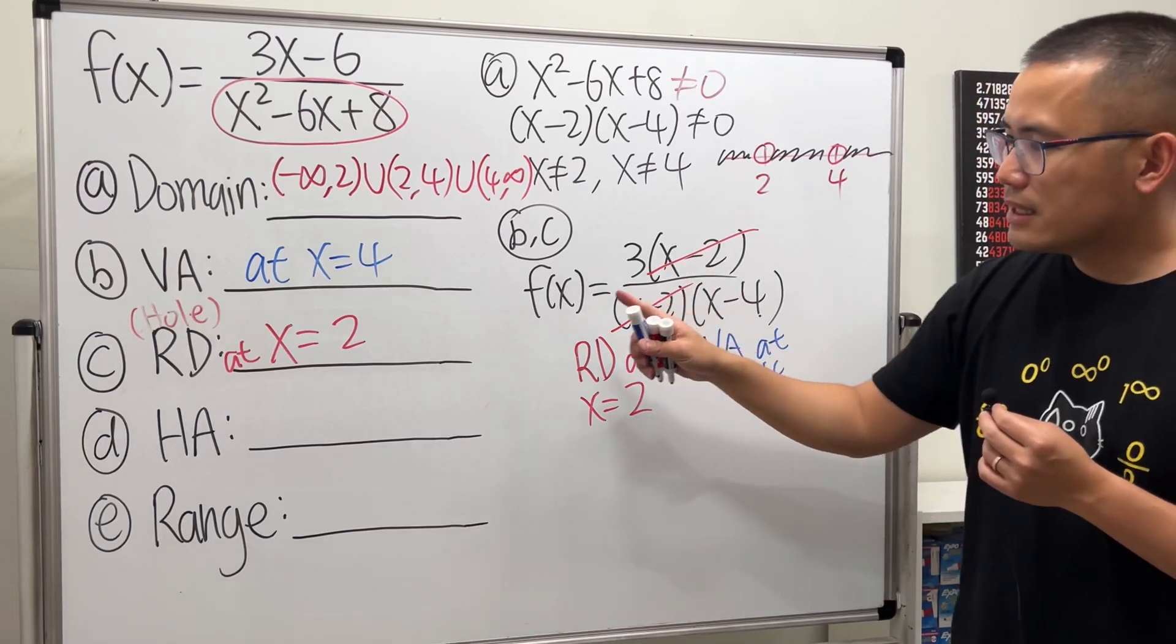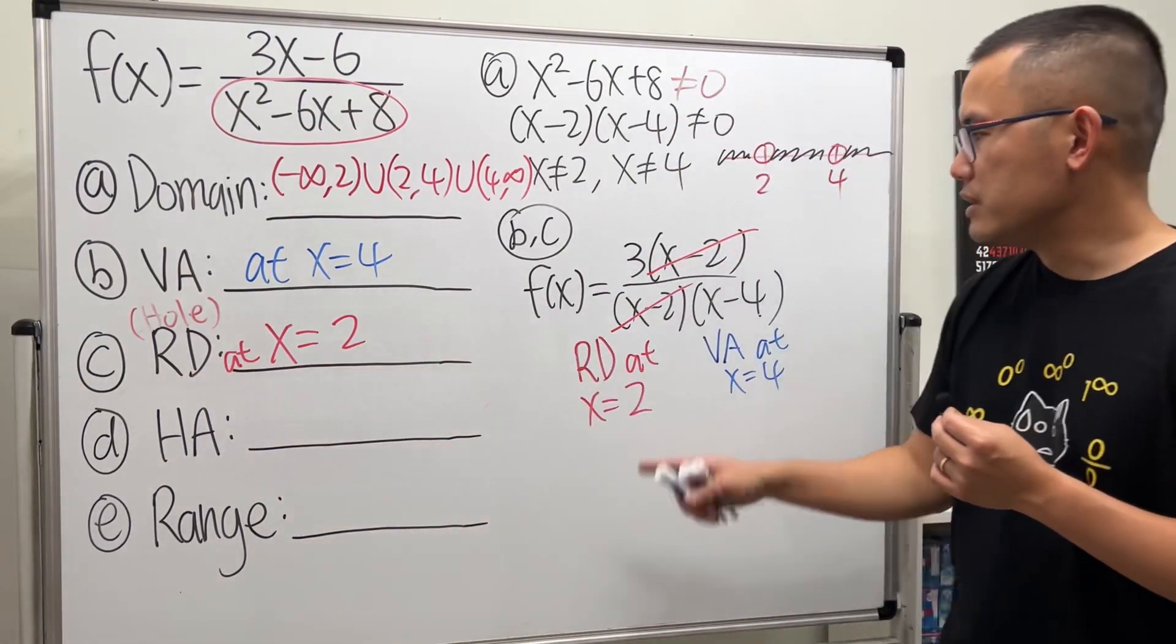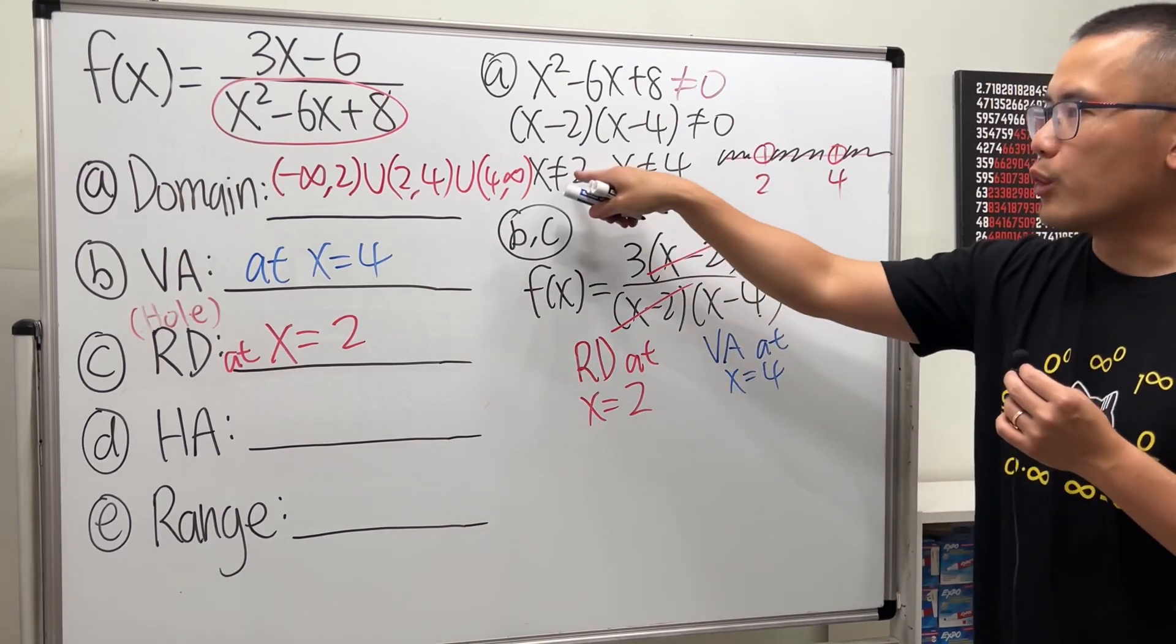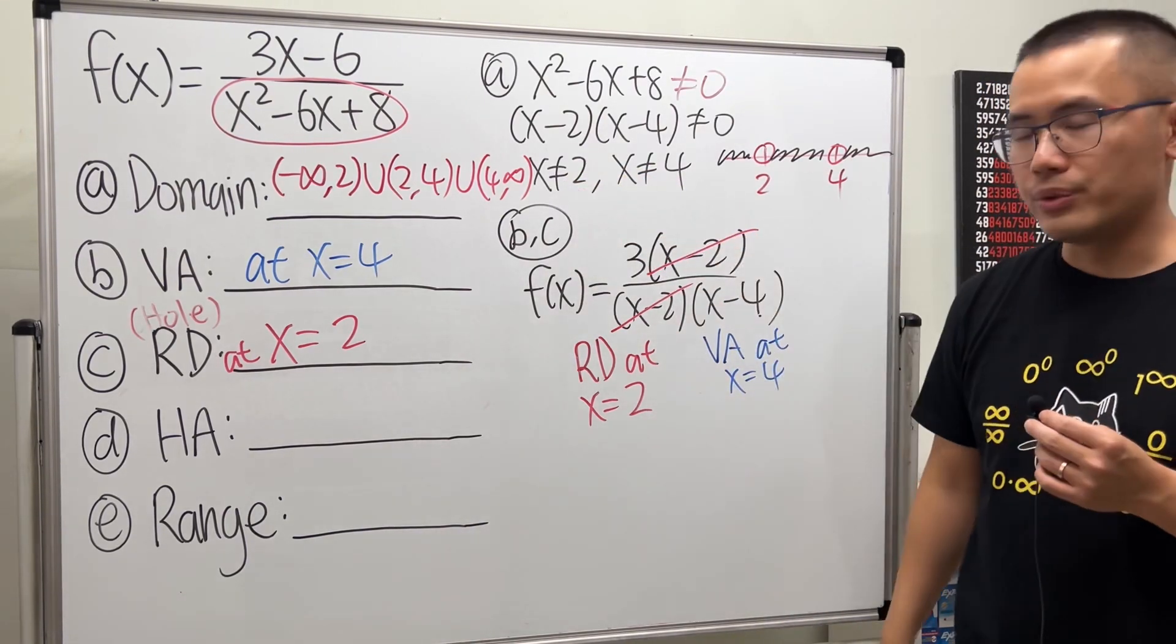The reason that this is called removable is because, you see, this and that, they cancel each other. You removed it. But we still have to know that, originally, x cannot be equal to 2. Right?